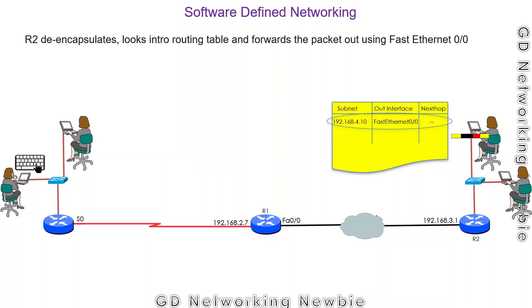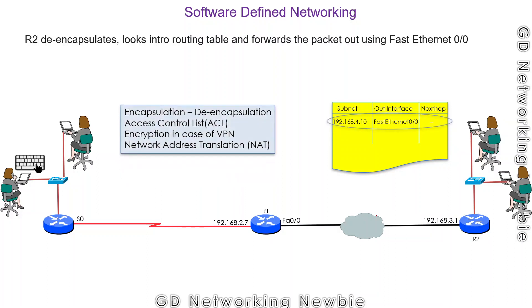In this example, networking devices perform several functions beyond just encapsulation and de-encapsulation. Routers may be configured with ACLs (access control lists) to decide whether to forward or discard a packet. If there is a VPN, they also handle encryption. If NAT (network address translation) is configured, they perform that as well. At the switch level, they look up MAC table entries.